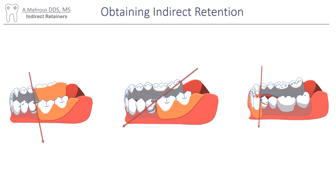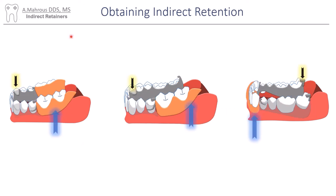A similar situation exists in a class 4, where it's recommended to split that indirect retainer line into two, therefore hitting the two back molars, which are going to be direct retainers anyway. Here are the rests in position. These rests will be able to indirectly retain the partial, preventing further rotation and damage to the soft tissues underneath.